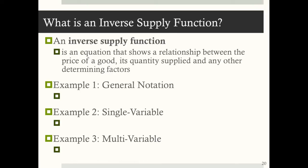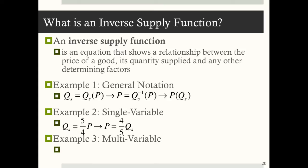An inverse supply function is an equation that shows a relationship between the price of a good, its quantity supplied, and any other determining factors. To solve for it, put price on the left-hand side of the equation. Starting from Q sub S equals five-fourths P, rearranging gives P equals four-fifths Q sub S. For the multi-variable case, starting from Q sub S equals five-fourths P minus one-fifteenth W, rearranging gives P equals four-fifths Q sub S plus one-fifteenth W.